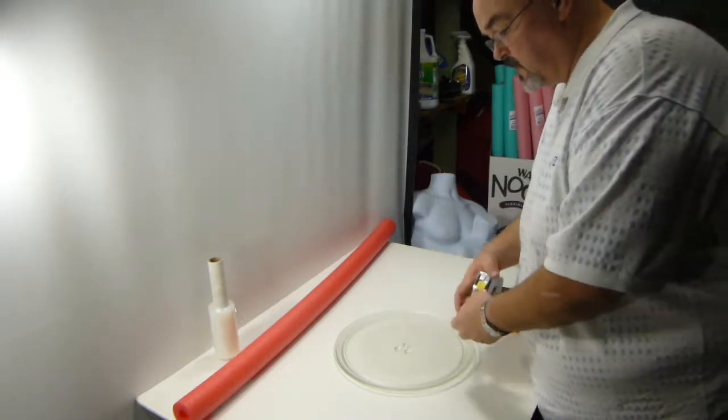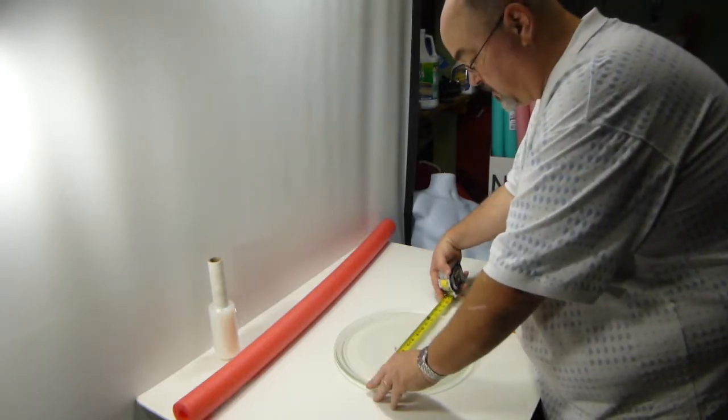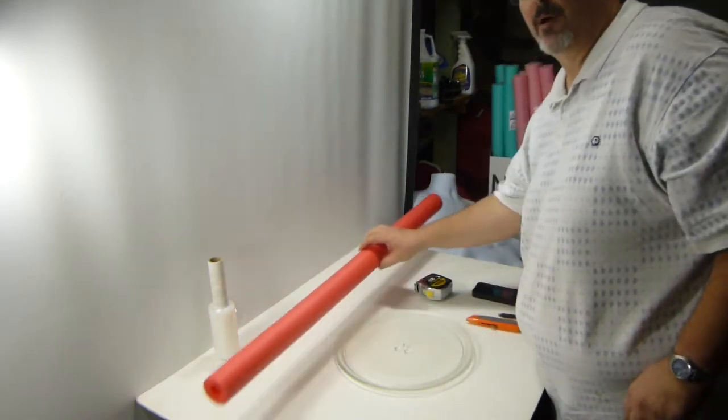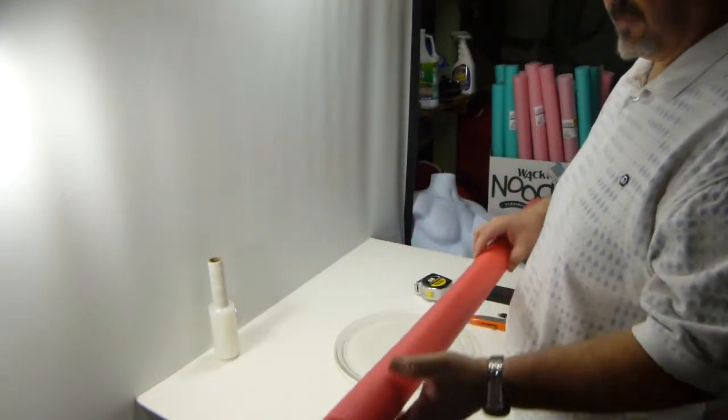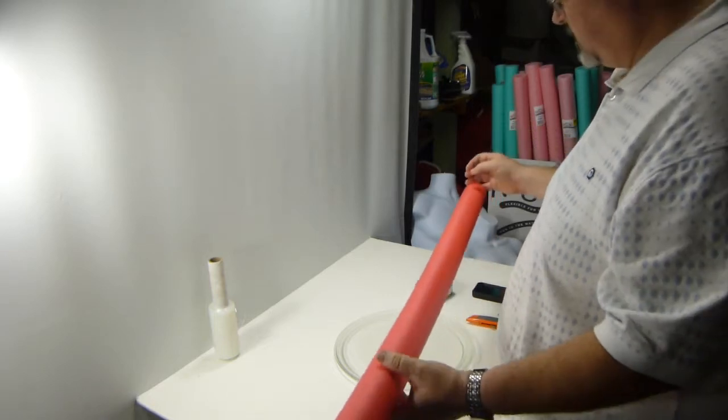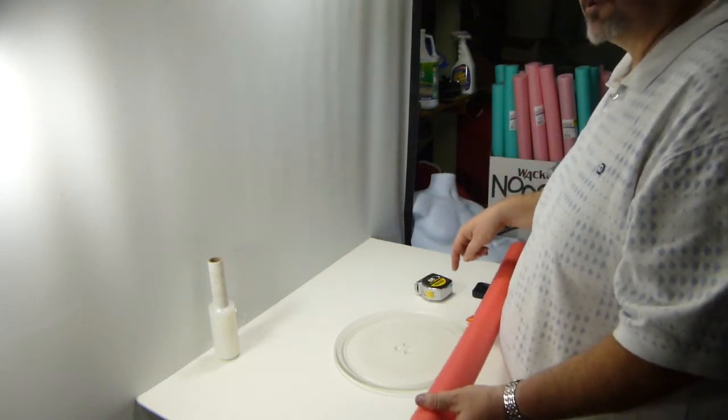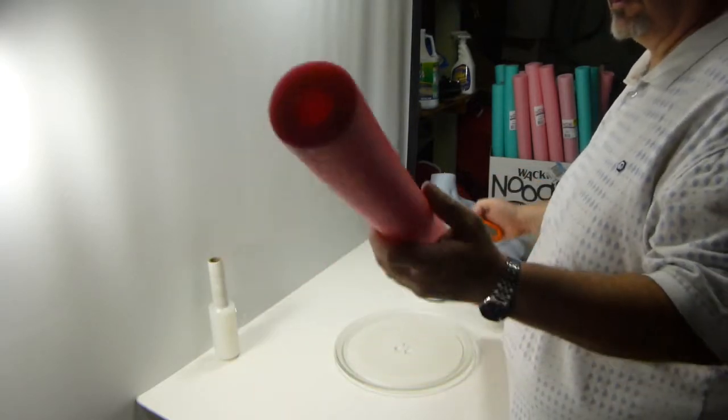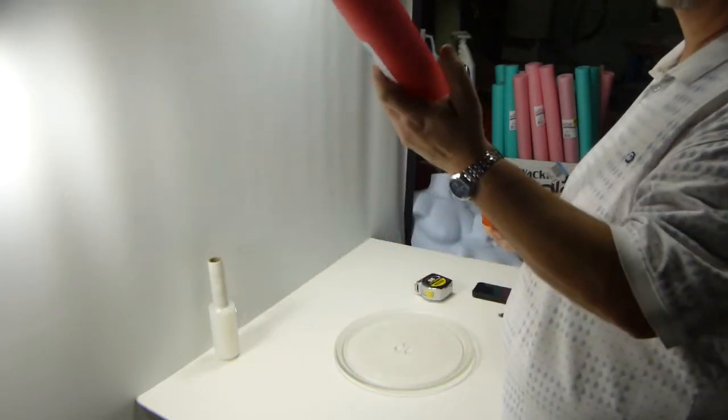The first thing you do is measure the width of your plate—this one's 13 and 3/8 inches. You multiply that by 3.14, and that'll give you the length of tube to cut. In this particular case, I need 42 inches, and this tube is 42 inches, so we're already good to go.